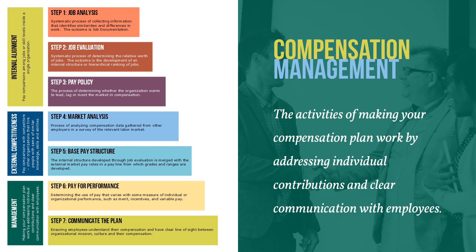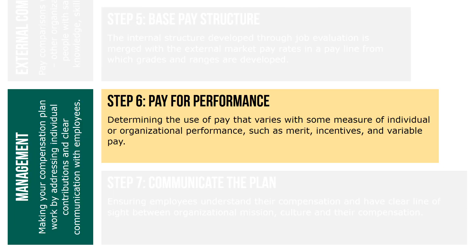The third and final functional area of building the compensation plan is compensation management. Compensation management refers to the activities of making your compensation plan work by addressing individual contributions and providing clear communication to employees. Step 6, pay for performance, is part of this third functional area, compensation management.